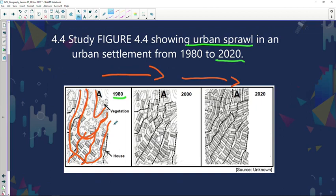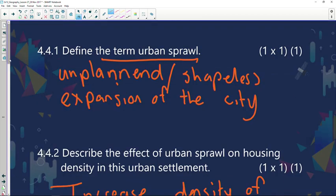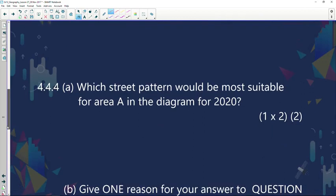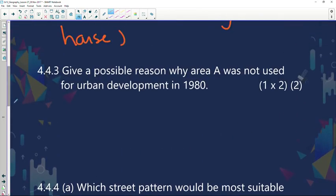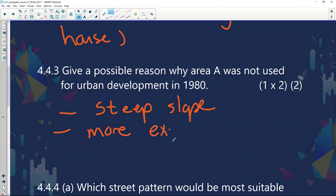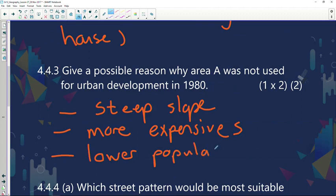Probably because it was a very steep slope, and if you do develop infrastructure on a steep slope it's more expensive. So that can be some of our answers. It might be because there was a lower population back then. As you can see, the contour lines represent it was a steep slope and it was more expensive to develop on steep slopes. And we can also say because of a lower population in 1980.